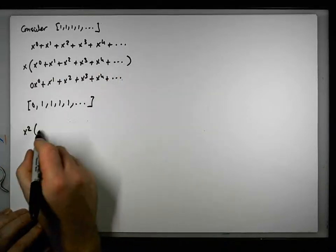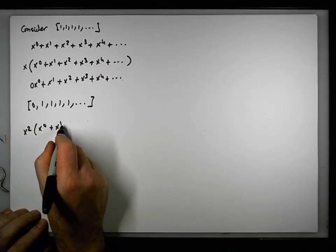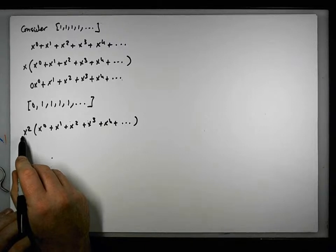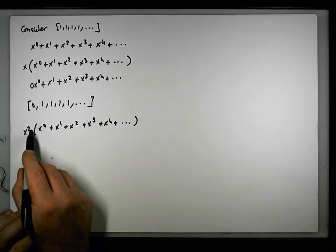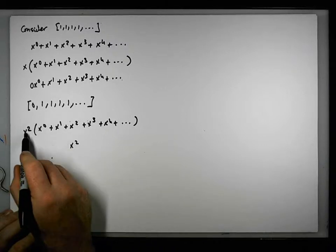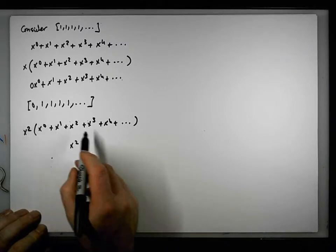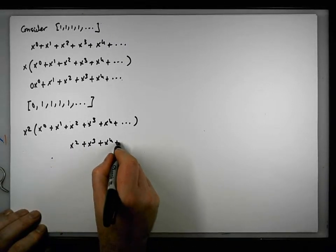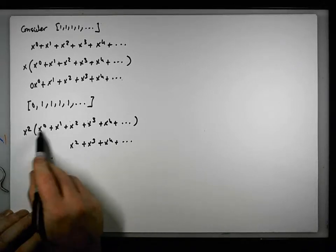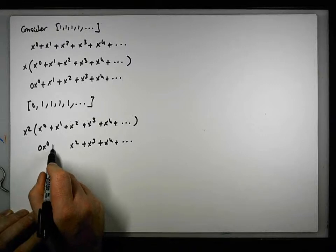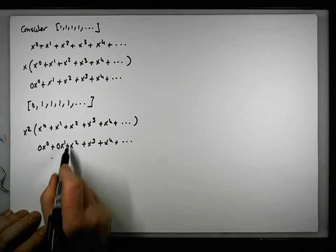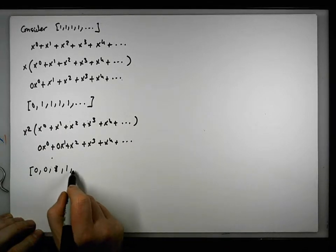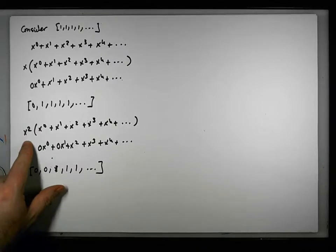If we multiply by x squared: x squared times x to the zero — adding exponents, two plus zero gives us two — becomes x squared. x squared times x to the one gives x cubed. x squared times x squared gives x to the four, and so on. The effect is we've lost the first two terms — x to the zero and x to the one — which encodes the sequence zero, zero, zero, zero, one, one, one, and so on.